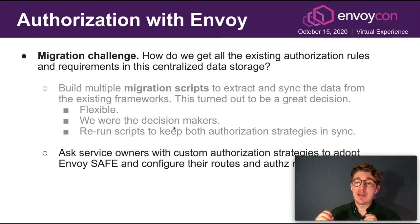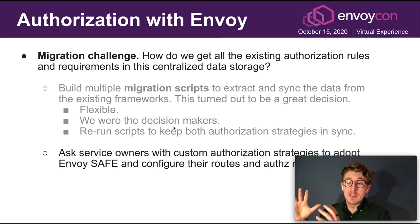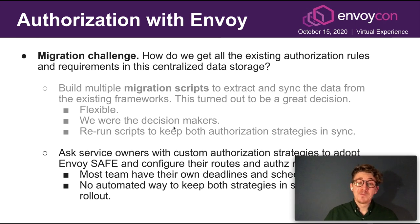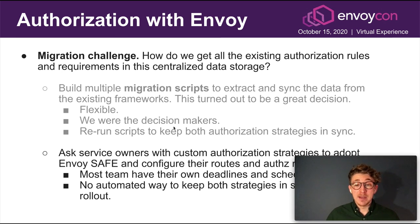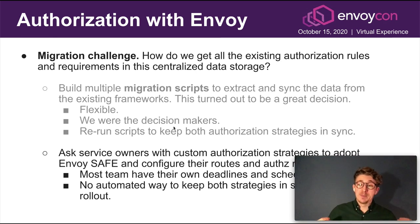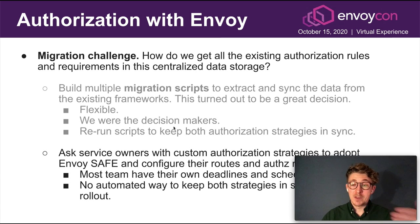We had a set of services with authorization requirements built in the application layer. Unfortunately, there was no easy way to extract that data and migrate it automatically, so we had to work with service owners to manually migrate these routes. Teams have their own deadlines and schedules, and there is no automated way to keep both strategies in sync. So we have to ask teams to update their permission requirements in both places until we're fully rolled out and they can deprecate the code in their application layer.